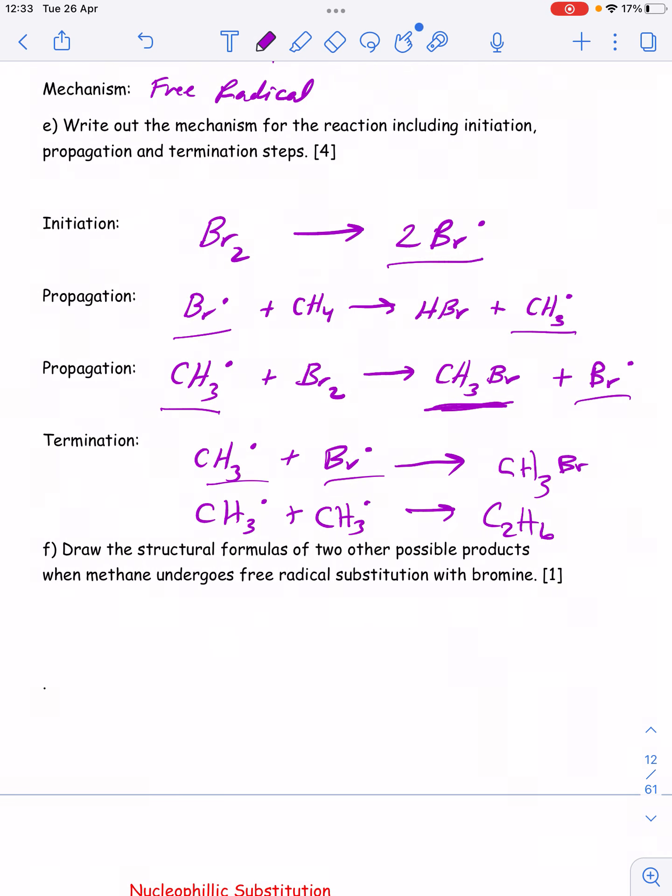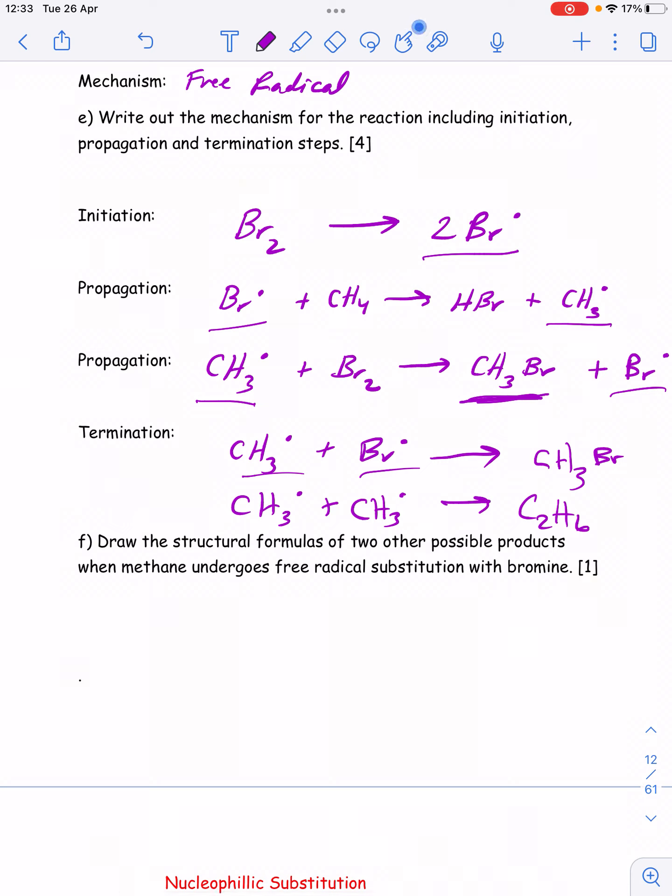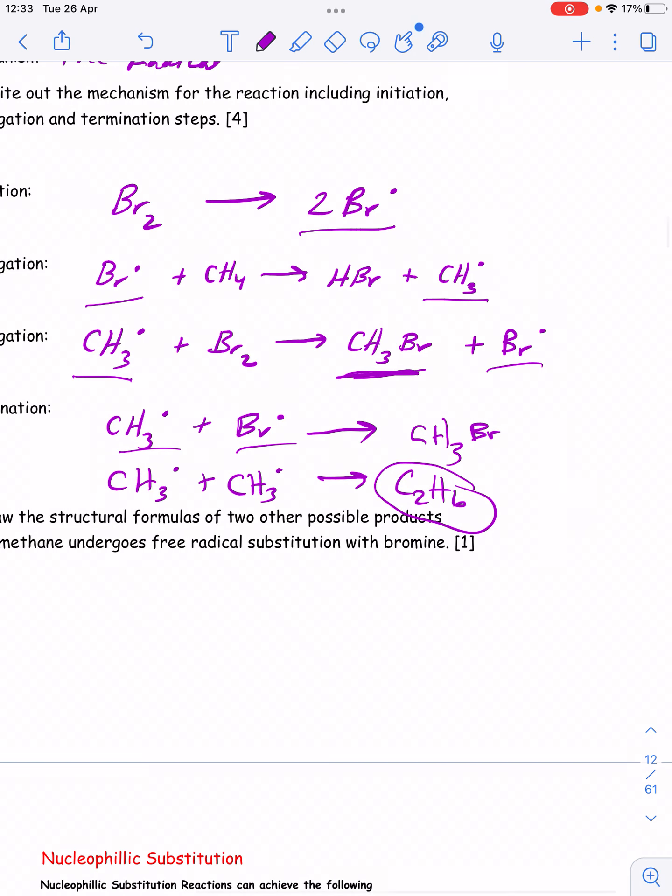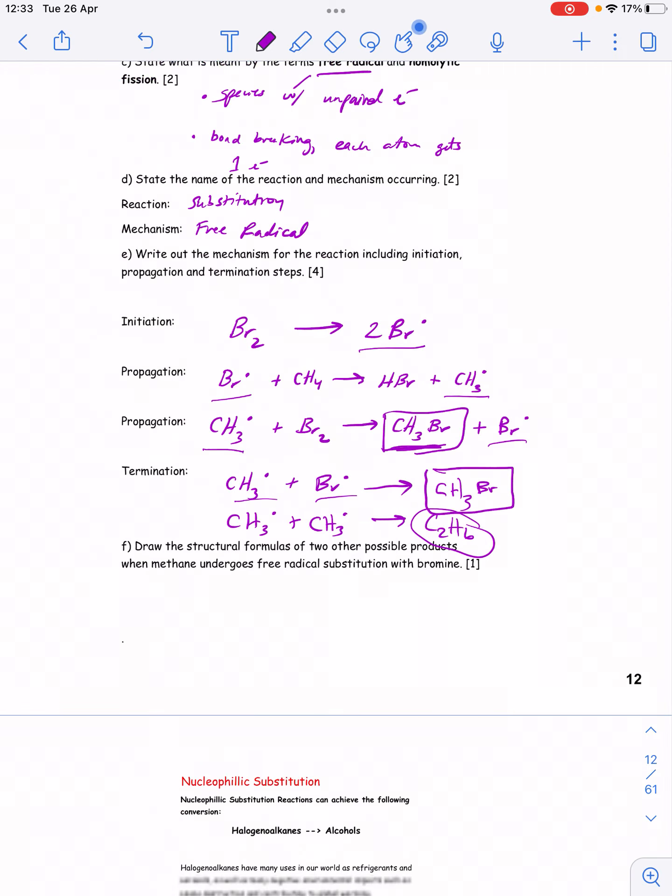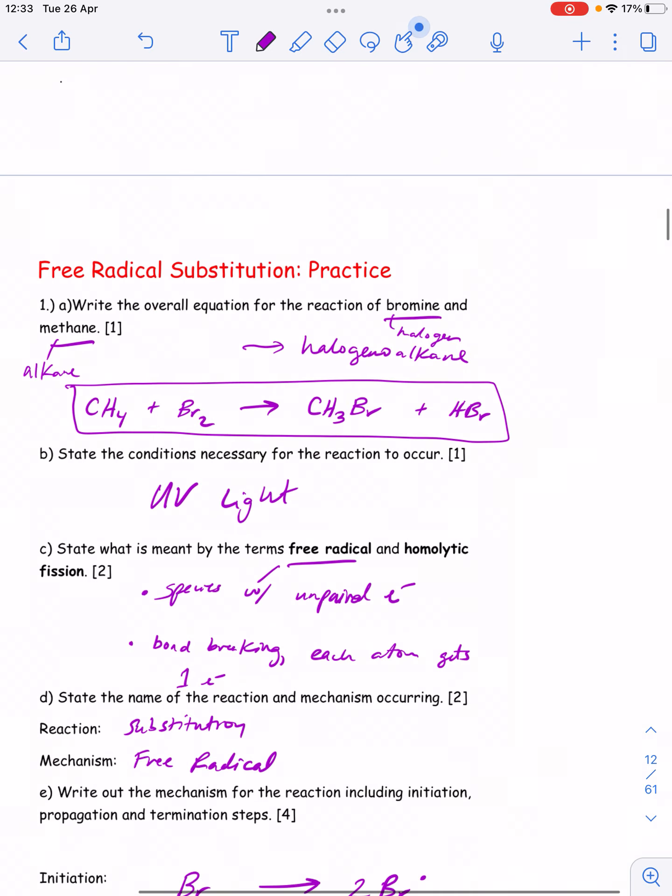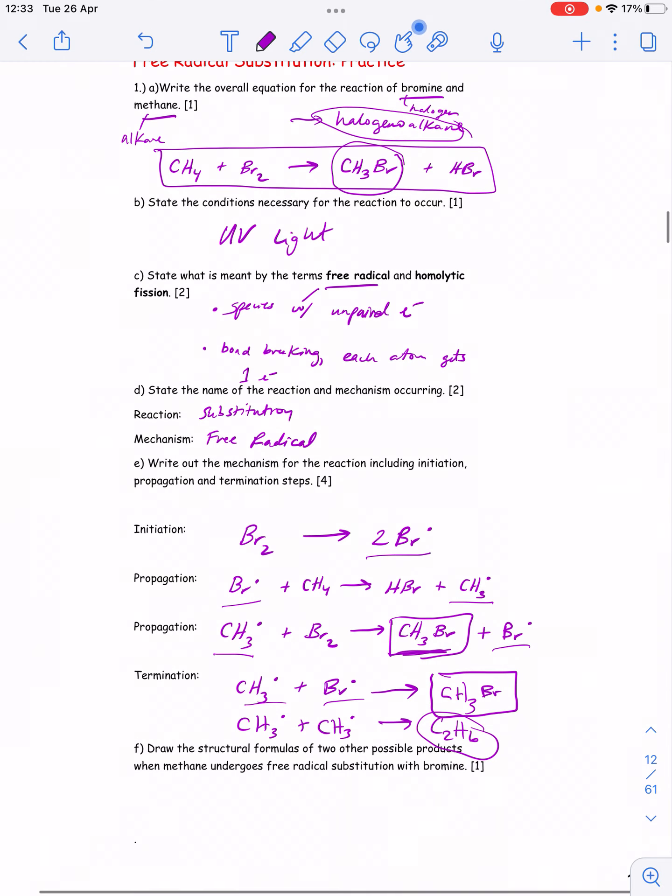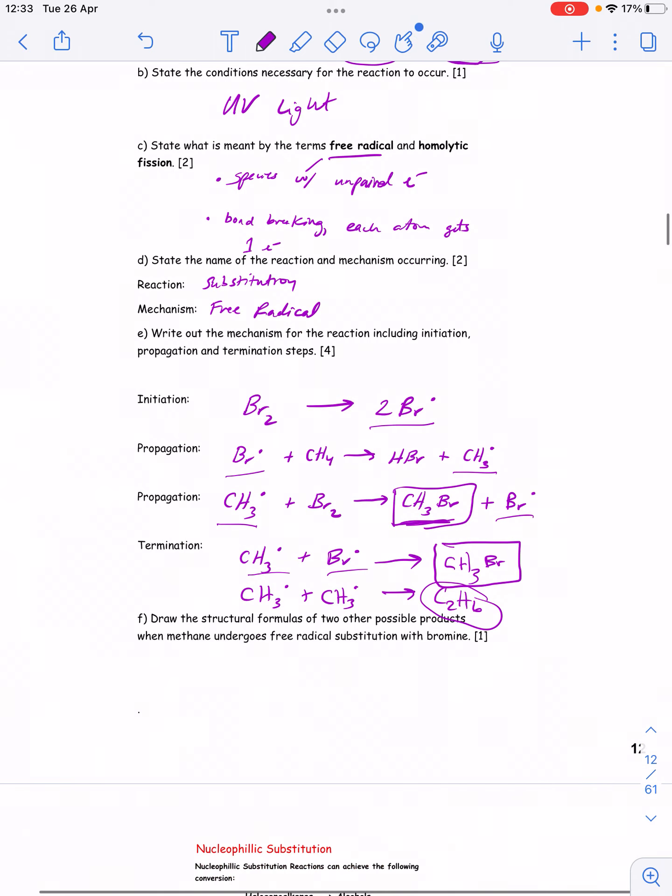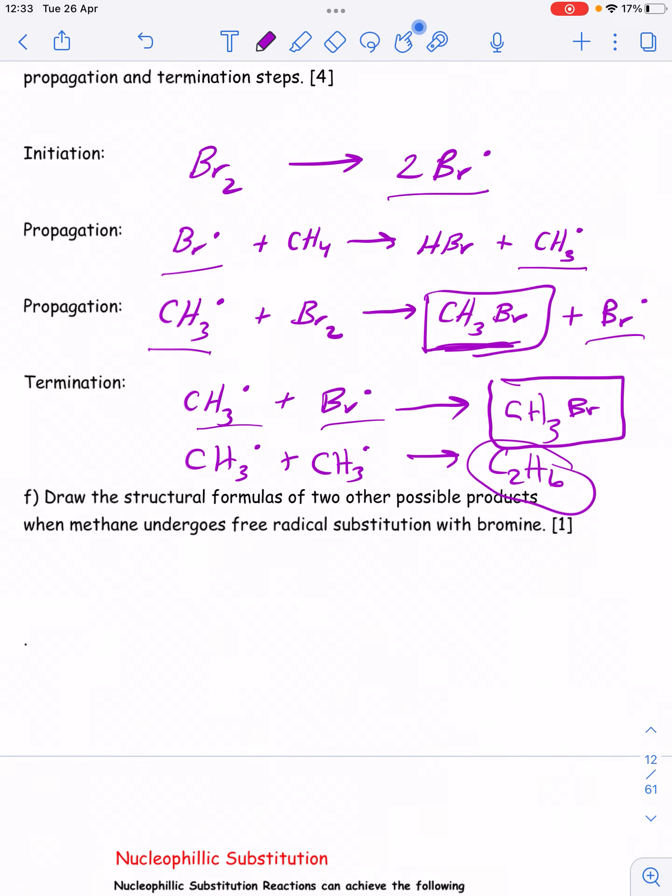The structural formulas of two other possible products when methane undergoes free radical substitution: I've already drawn one because the intended product is bromomethane, the halogenoalkane. That's what we expect to make. The HBr is another product that we make, but we expect that. Some of the other ones we can form are ethane.